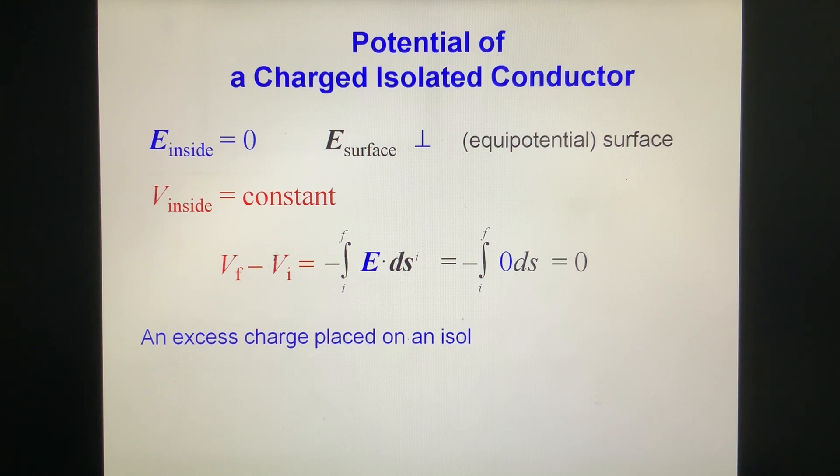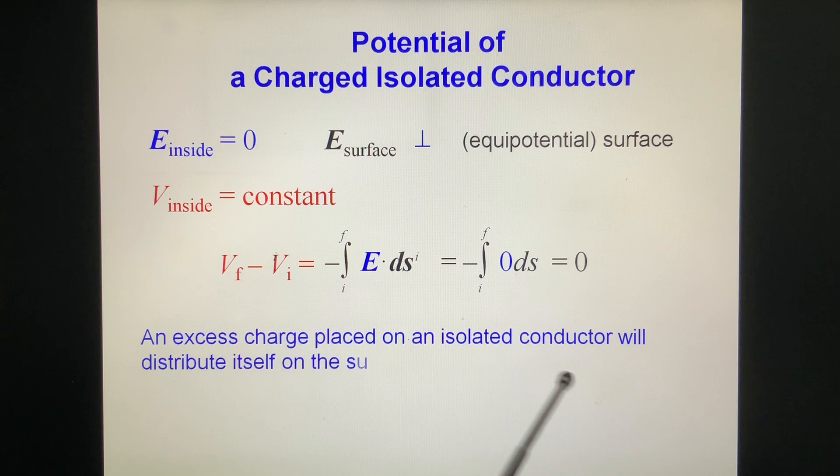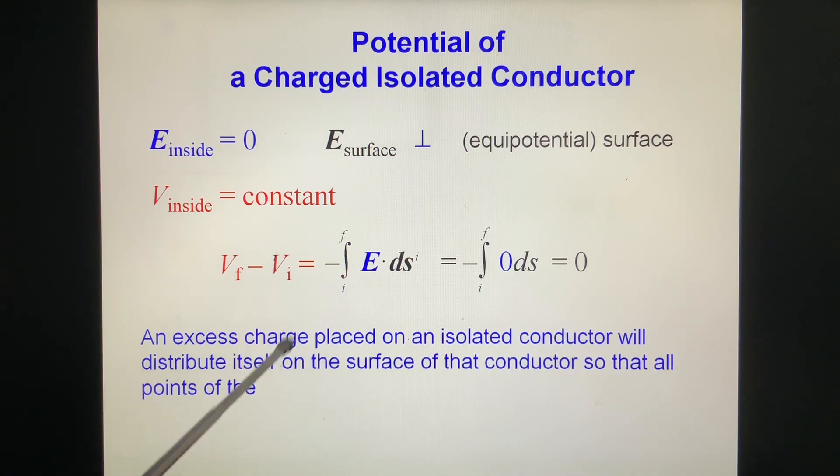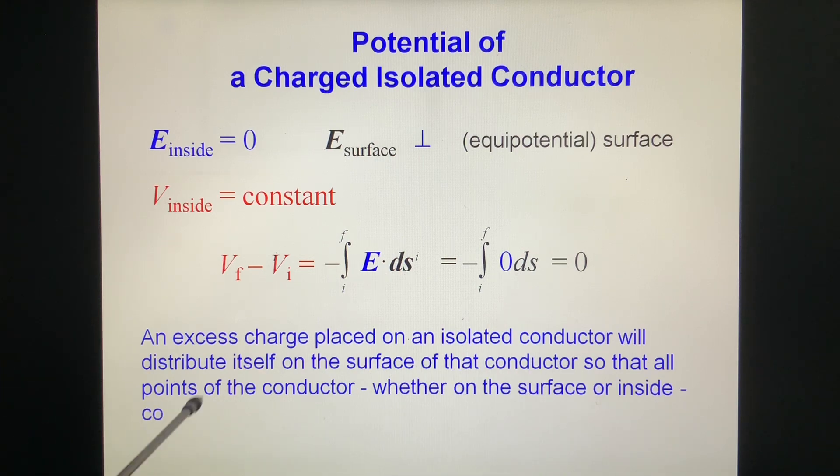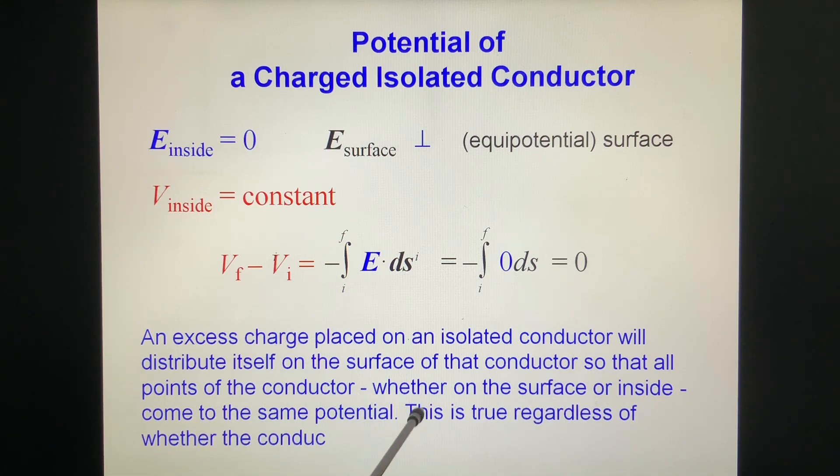Then we put an excess charge placed on the isolated conductor. And it will distribute itself on the surface of that conductor, so that all points of the conductor, whether on the surface or inside, come to the same potential. This is true regardless of whether the conductor has an internal cavity.